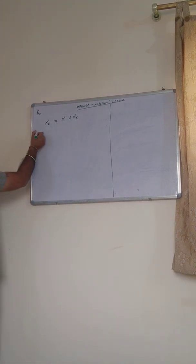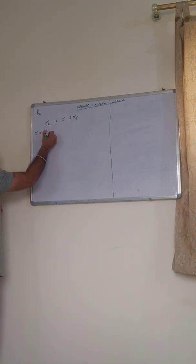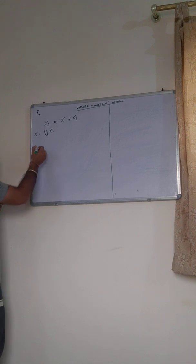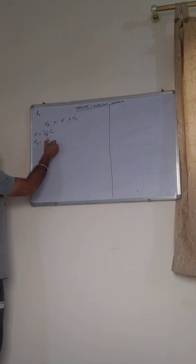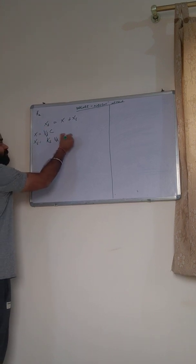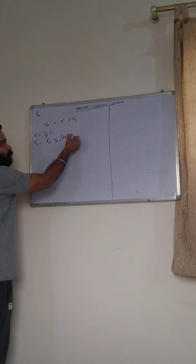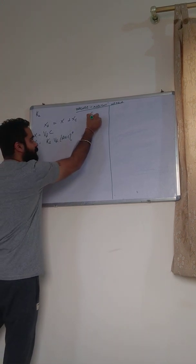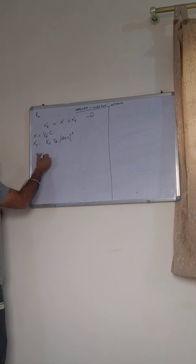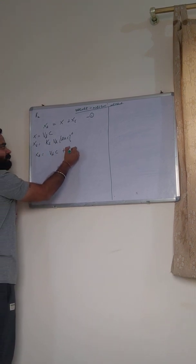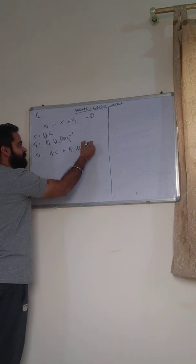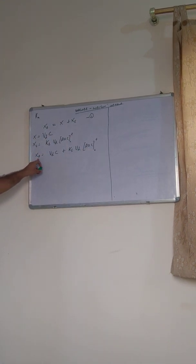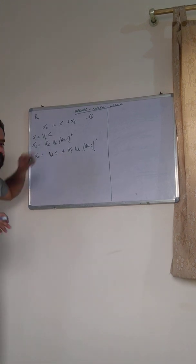As we have studied, X can be given by VD·C, where VD is the volume of distribution and C is the plasma concentration. Similarly, XE can be given by KE·VD·AUC with limits going from time 0 to time T. This has already been covered in one-compartment models. Substituting these values in equation 1, XA becomes VD·C plus KE·VD·AUC with limits from 0 to time T. This equation gives the amount of drug absorbed at any given time T.